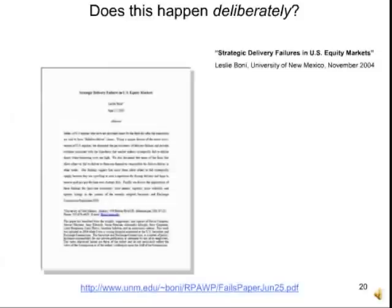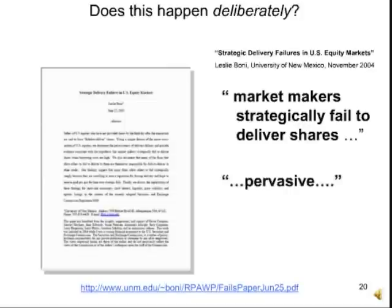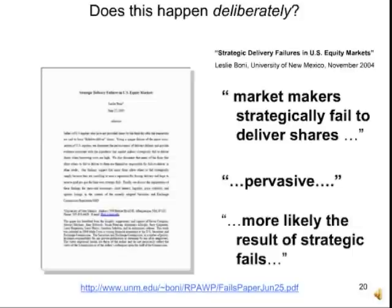So now the question is: is it just happening randomly, or is someone doing it deliberately? The SEC hired an economist named Leslie Bonney from the University of New Mexico. She wrote 'Strategic Delivery Failures in U.S. Equity Markets.' She takes a statistical approach, saying that if these failures are just random — folks who can't find their stock in their desk drawers — you're going to see these failures scattered randomly throughout the system. In fact, the distribution of FTDs shows that market makers, which is an activity of broker-dealers, do strategically fail to deliver. Again, it's pervasive, and the distribution confirms it's more likely to be a result of strategic failures than inadvertent or random error. So you can't see the bad guys, you can't get their names, but they leave statistical footprints — and Dr. Bonney found those footprints in the trading records.